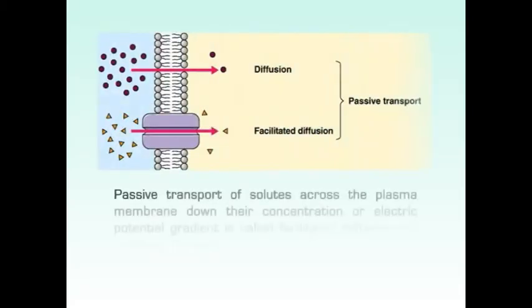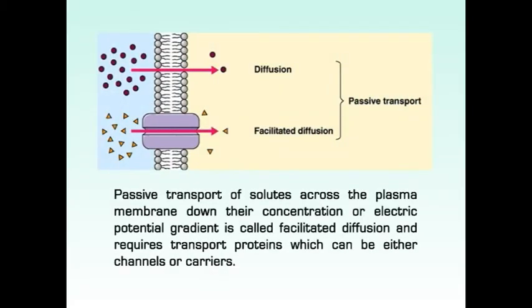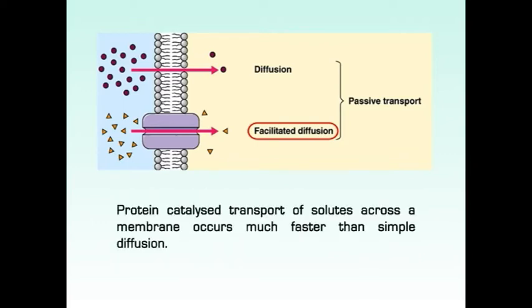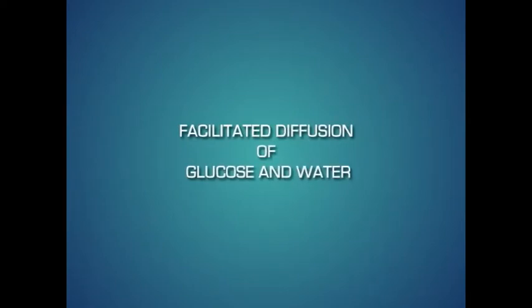We also call it facilitated diffusion or facilitated transport. Passive transport of solutes across the plasma membrane down their concentration or electric potential gradient is called facilitated diffusion and requires transport proteins which can be either channels or carriers. Protein-catalyzed transport of solutes across the membrane occurs much faster than simple diffusion. Let's look at the example of facilitated diffusion of glucose and water.